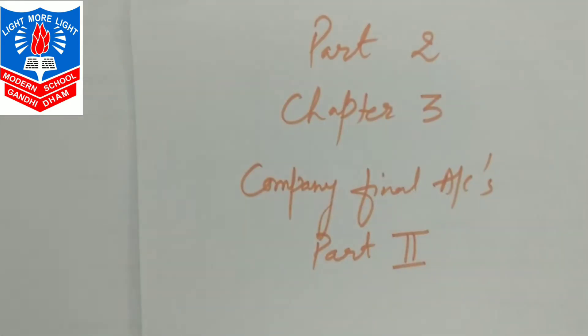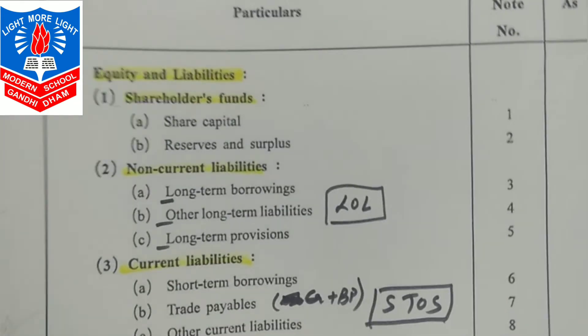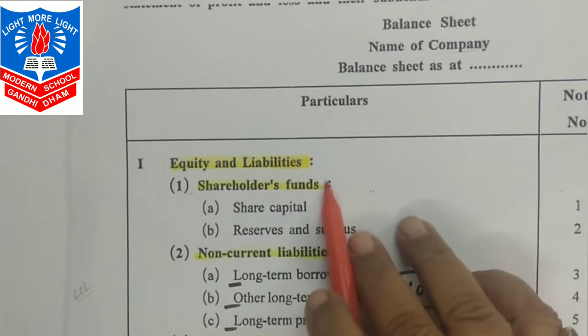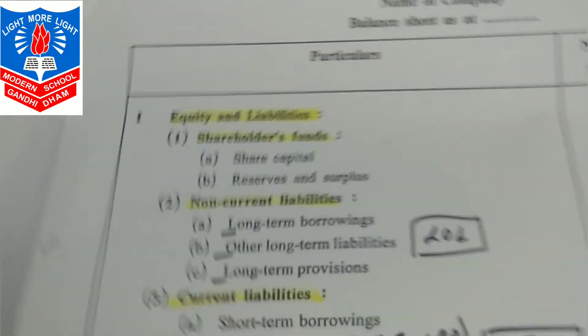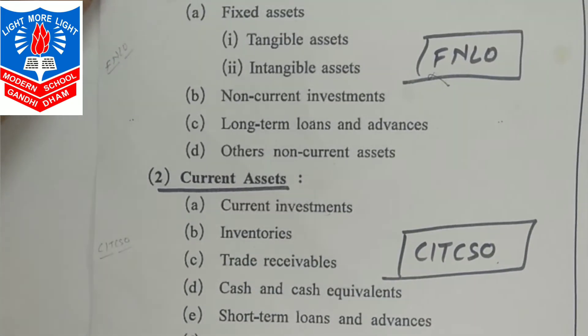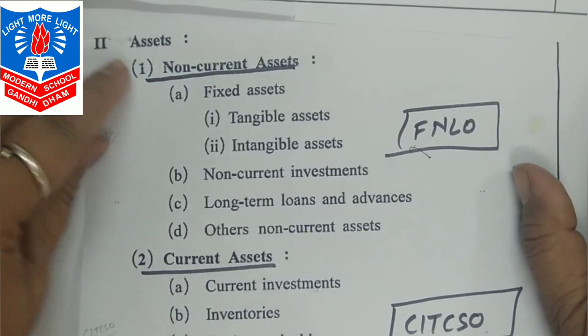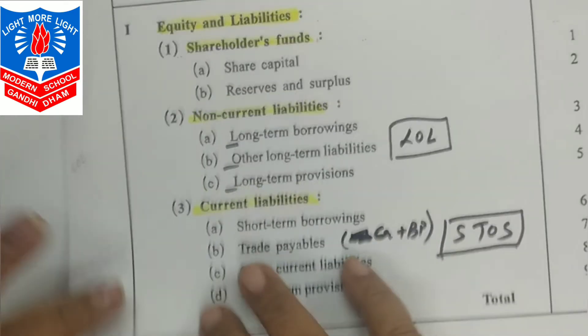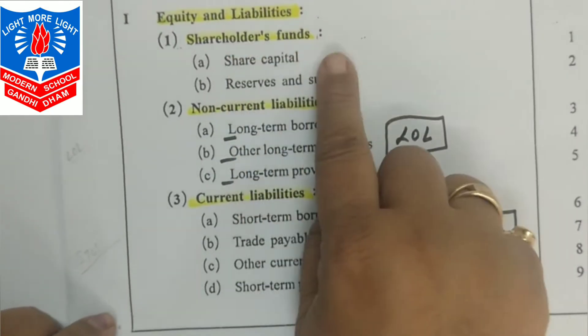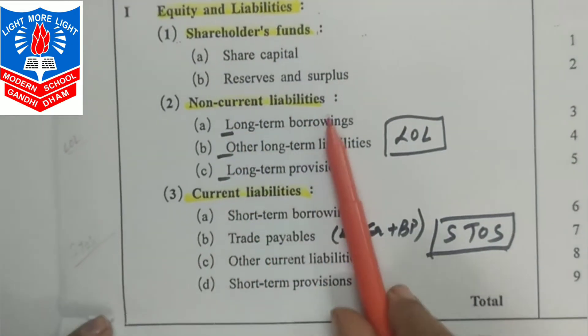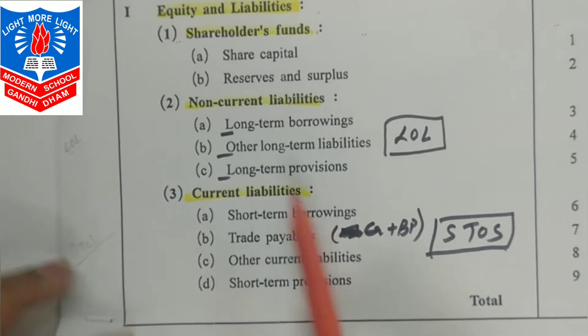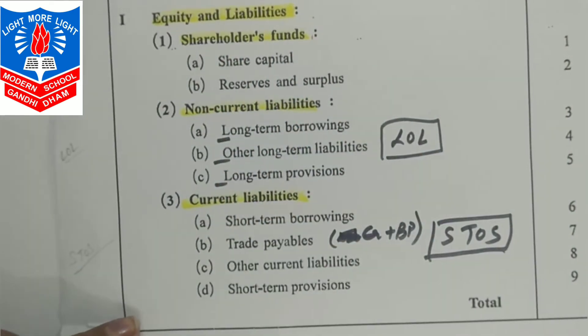Let us go for details of the balance sheet. एक बार फिर से revise करते हैं। Two main heads: first is equity and liabilities, and second is assets. Within equity and liabilities there are three main heads: shareholders' fund, non-current liability, and current liability. Let us understand shareholders' fund in detail.